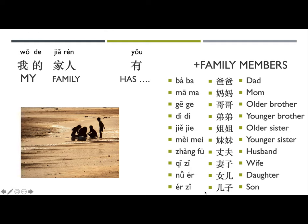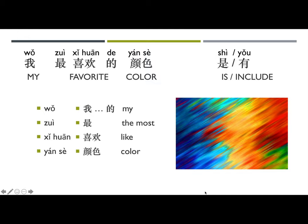我的家人有丈夫和女儿. Now let's talk about introducing your favorites. To say 'my favorite,' say 我最喜欢的. 我的 can be separated — you can insert descriptive words between 我 and 的 to say 'my favorite,' 'my least favorite,' etc.